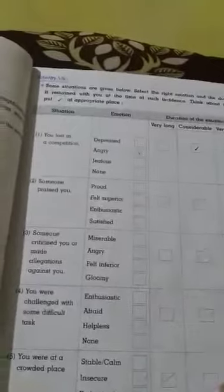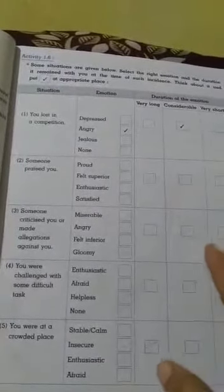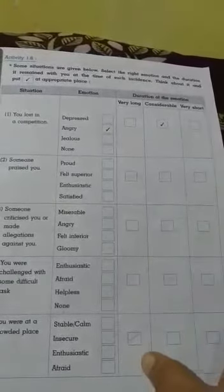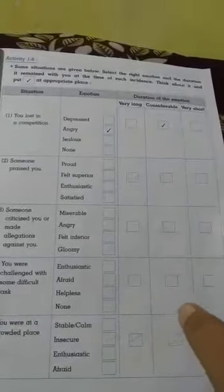Activity 1.6: Some situations are given below. Select the right emotion and duration it remained with you at the time of such incidence. Think about it and put a tick mark at the appropriate place.